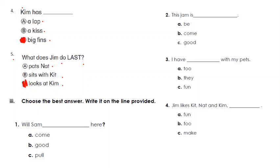Question number two: Choose the best answer, write it on the line provided. Number one: Will Sam blank? What goes in the blank? Come, good, or pull? So think about it. The answer should be, Will Sam come here? Sentence number two: This gem is - be, come, or good? This gem is good.